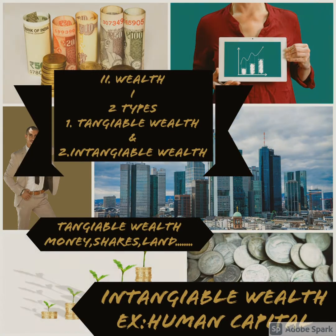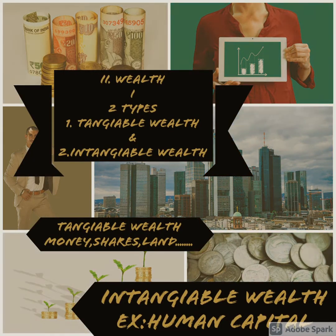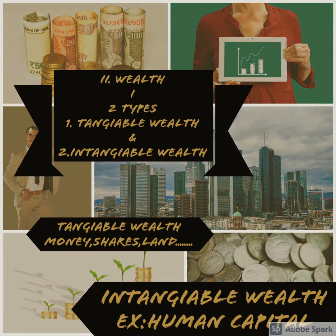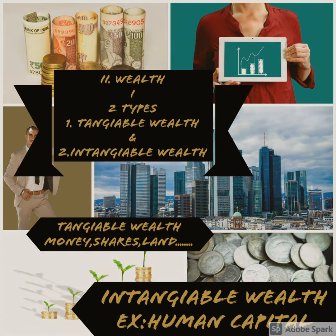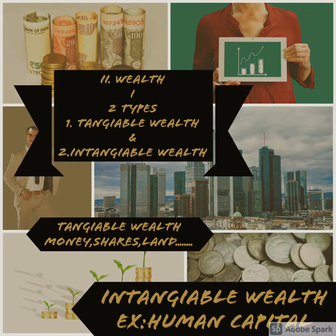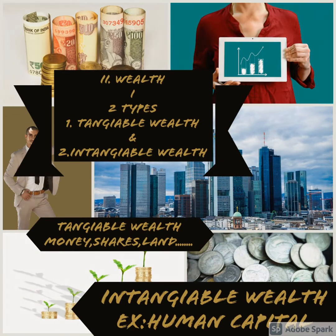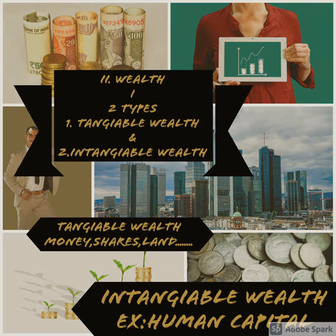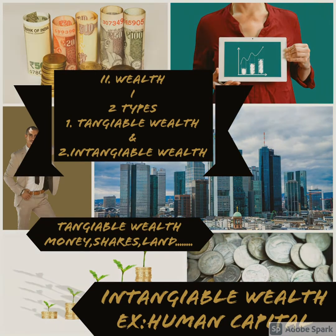Another economic concept is wealth, which is of two types: tangible wealth and intangible wealth. Tangible wealth has a physical form — examples are money, shares, land, and buildings. Intangible wealth is invisible; that is human capital.